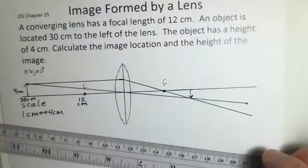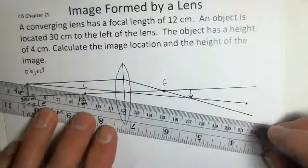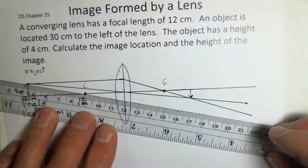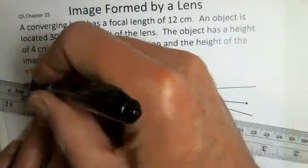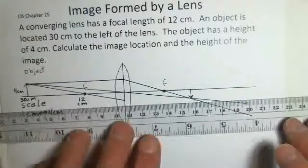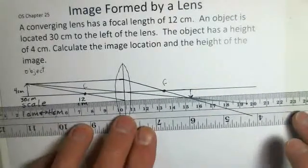I could use rule number three. Rule number three: if we pass light through the focal point before hitting the lens, that light comes out parallel to the optic axis.